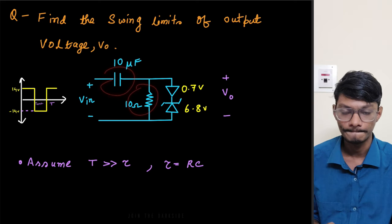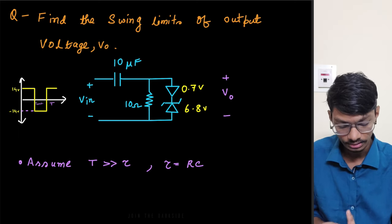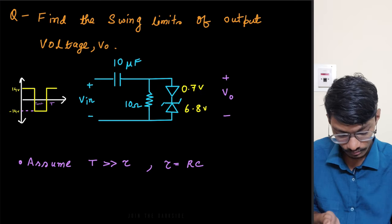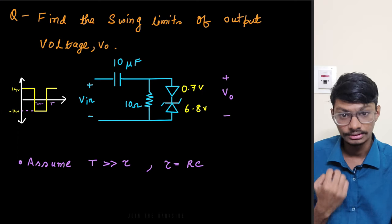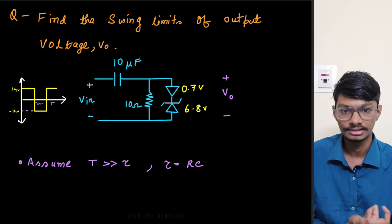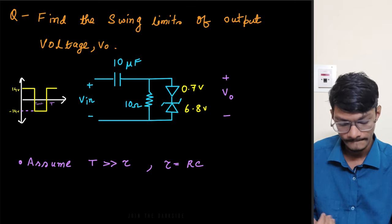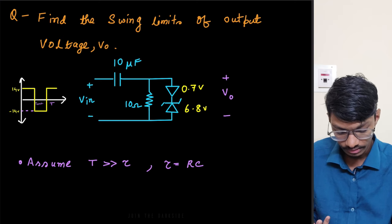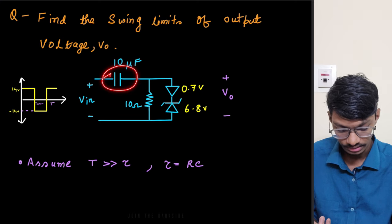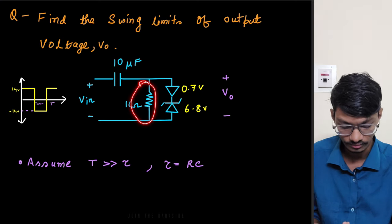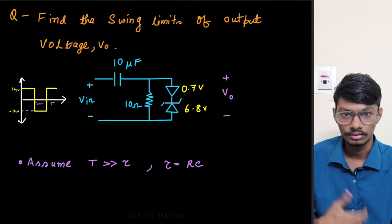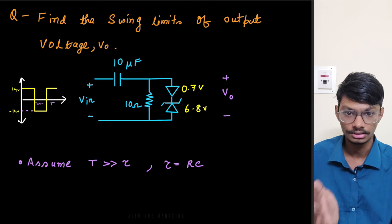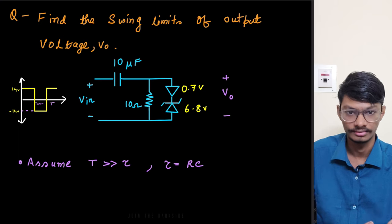At first glance you might say this is a voltage regulator circuit, so the maximum voltage it can go to is 7.5 volts — but that is wrong. For the negative half cycle, you might think the capacitor charges fully and at steady state current is zero, hence minimum voltage is zero — but that won't happen either. Let's analyze the circuit for the positive half cycle and the negative half cycle separately to understand why.